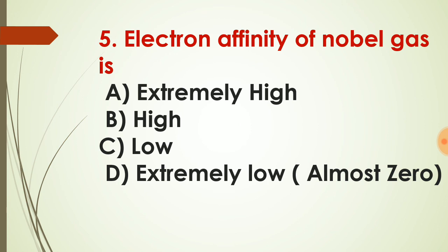Question number five: the electron affinity of noble gas is? The answer for question number five is D — extremely low or almost zero. But why is it zero? What is electron affinity? This is a task for you. Don't get bored or irritated because of tasks, because the more you practice, the more you learn, and the more you will be able to solve in your entrance examinations.